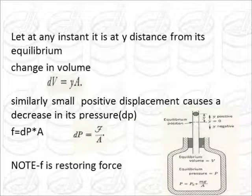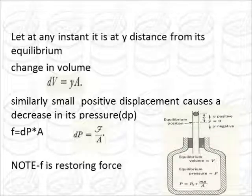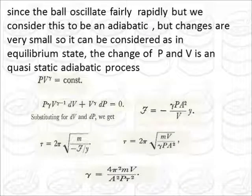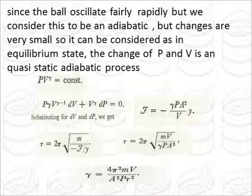And we can show by equations that it oscillates simple harmonically. Now where, here, dV is the change in volume as the ball oscillates, and we have the force F is the restoring force. Now using all these equations, what we can do is we can actually relate the time period to the gamma. So here we get an expression for gamma in terms of its time period. Now since the ball oscillates fairly rapidly, we consider this to be an adiabatic process. But changes are very small that it can be considered to be equilibrium strain. The change of P and V is the change I am talking about.